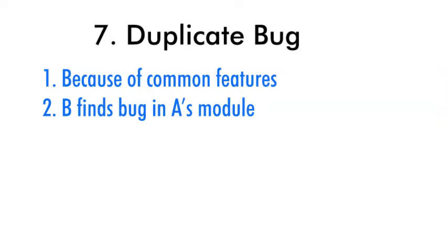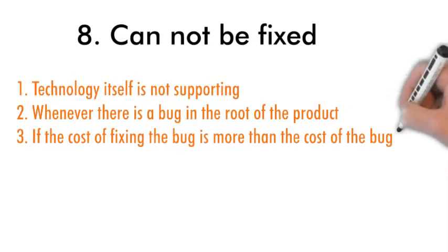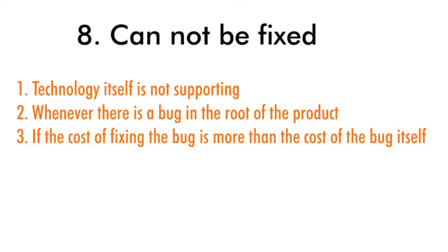The next stage is cannot be fixed. The test engineer finds a bug and sends it to the development lead, who sends it back saying it cannot be fixed. This can happen because the technology itself is not supporting the fix, or the programming language being used doesn't have the capability to solve the problem. It also applies when there is a bug at the root of the product and it's a minor bug. However, if it's a critical bug, the development lead cannot reject it. Another case is when the cost of fixing the bug exceeds the cost of the bug itself.